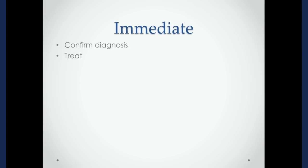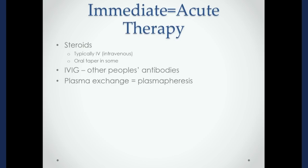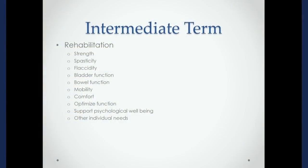What happens next? In the immediate term, we have to confirm the diagnosis, do the workup, make sure we know what we're dealing with, and provide acute treatments. In an autoimmune or inflammatory condition, those tend to be similar: steroids — usually given IV followed by a taper of oral steroids — IVIG, which is other people's antibodies pooled into a product given into an IV that can help calm inflammation while also giving a boost to the immune system, and plasma exchange or plasmapheresis, which filters the blood of inflammatory mediators like antibodies. Outside the acute setting, in the intermediate term, the focus is on rehabilitation — for how long depends on the patient, condition, and symptoms.